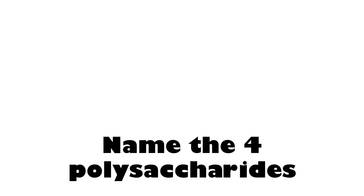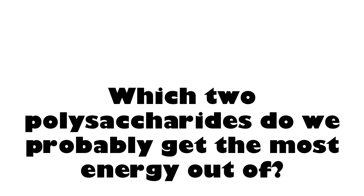What are the four polysaccharides? There's glycogen, starch, cellulose, and chitin. Which two would we get the most energy out of — in other words, which polysaccharides are energy-storing molecules? Starch is an energy-storing molecule, and glycogen is an energy-storing molecule. Cellulose, or fiber, is a structural type of polysaccharide. And chitin is what the exoskeleton of insects is made up of.